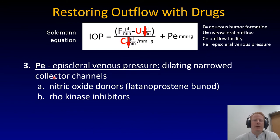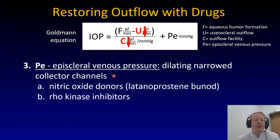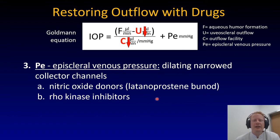We can also lower the episcleral venous pressure with drugs. If narrowed collector channels and distal outflow tract vessels are in fact part of the pathology of glaucoma — we don't know that yet for sure — but we know that when we dilate those, we can get a pressure drop. Nitric oxide donors like latanoprostene bunod or Rho kinase inhibitors can dilate these vessels and lower pressure.